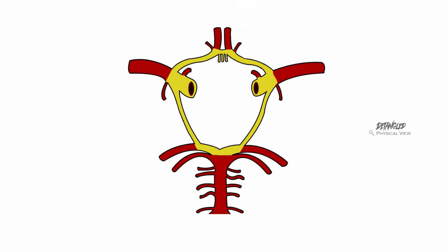It connects all the major arteries that supply the brain. This circular pathway works as a backup system. For example, when any major artery blockage occurs, it supplies blood collaterally without causing ischemia.